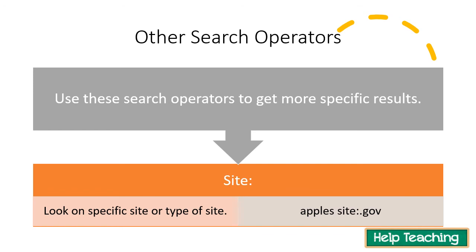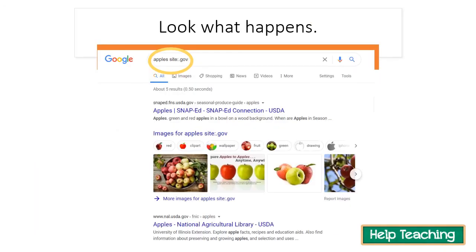Another helpful search operator is site. If you want to search on a specific site — for example, helpteaching.com — to see if they have questions or worksheets on a topic, you can type your topic and then 'site:helpteaching.com.' When conducting research, it's better to use sites ending in .gov because they tend to be more reputable. So you can search your topic with 'site:.gov' and only get results from .gov sites. I searched 'apples site:.gov' and all my results are from reputable .gov sites.